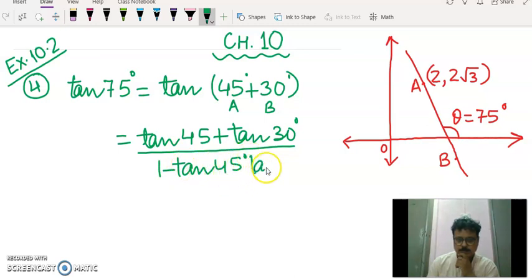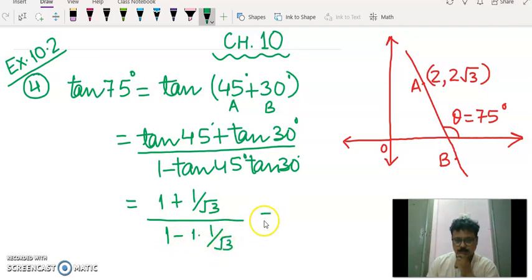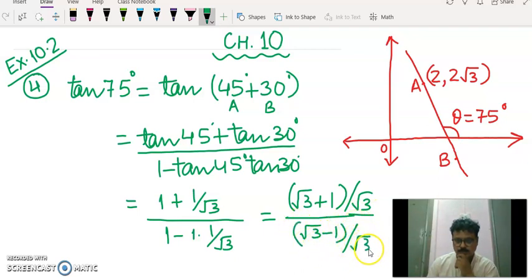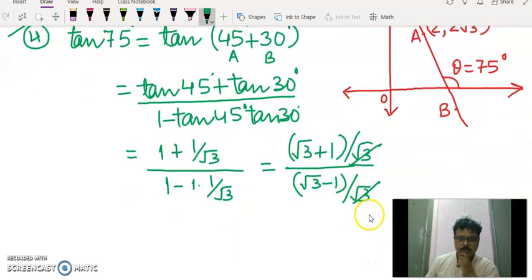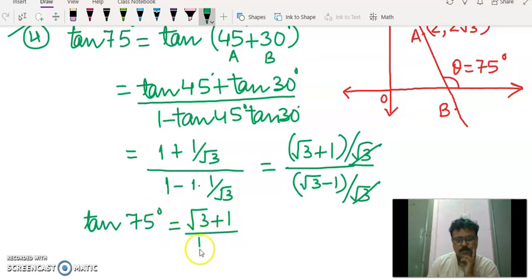Now we know the values of tan 45 as well as tan 30 degree. So we will put the values 1 plus 1 by root 3 upon 1 minus 1 into 1 by root 3. So taking root 3 plus 1 we get root 3 plus 1 whole divided by root 3 similarly here also root 3 minus 1 whole divided by root 3, root 3 cancel. So the value of tan 75 is root 3 plus 1 upon root 3 minus 1.